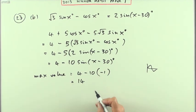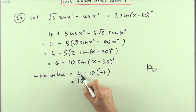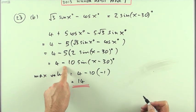If it asked for the minimum value, it would have been when the sine was at the biggest, it'd be 4 minus 10 which is negative 6. So 14 is the answer. Well you could just have thought what's the graph of that look like.